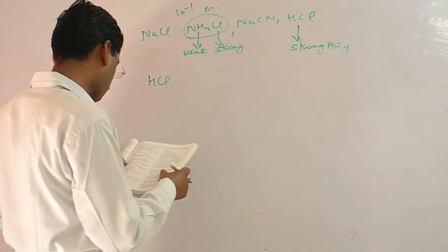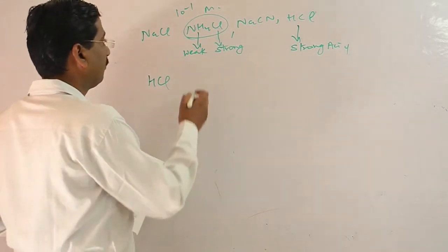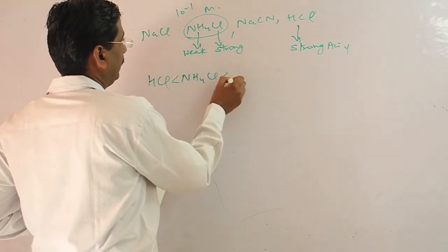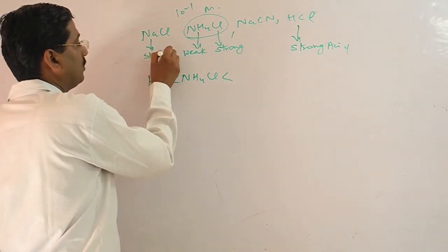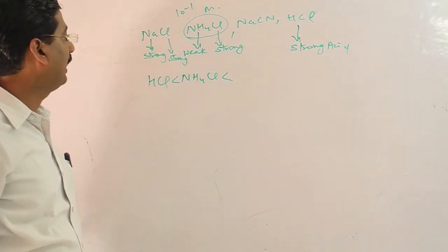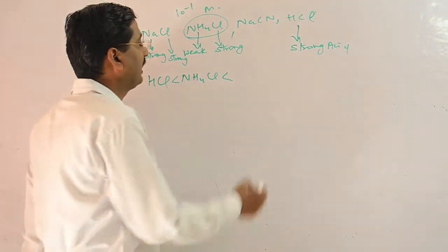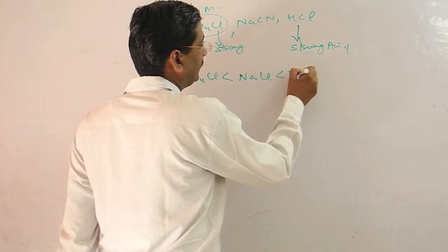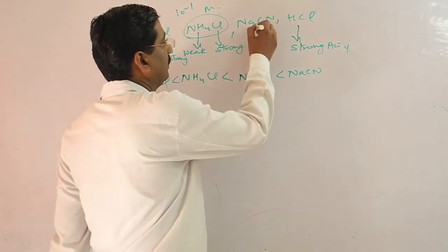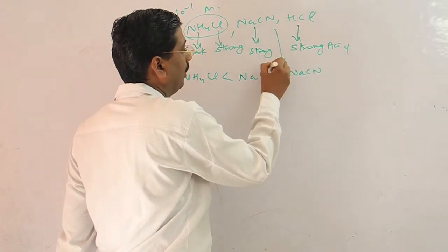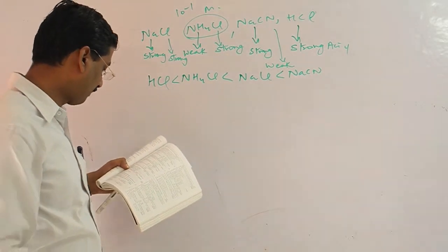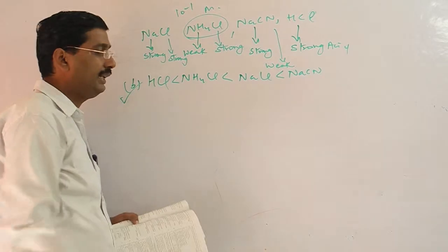In NH4Cl, the acid component is strong. For NaCN, if you use the corresponding acid and base, the pH is neutral. Since NaCl has a strong acid component and weak base component, this will be your increasing order. So your B option is the correct answer.